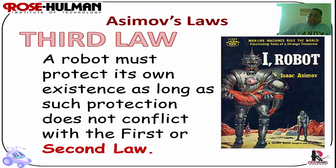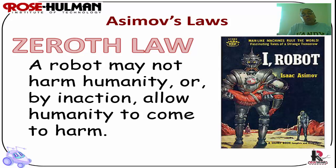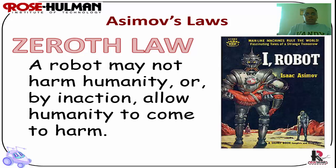Several years later, Asimov determined there should be a zeroth law — a precursor to the prior three. The zeroth law is: a robot may not harm humanity, or by inaction allow humanity to come to harm. Since we're typically doing mobile robotics in this class we probably don't really need the laws, but it's always a good thing to bring up.